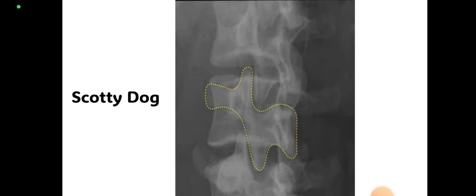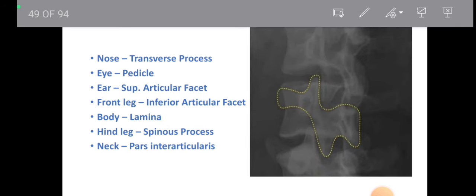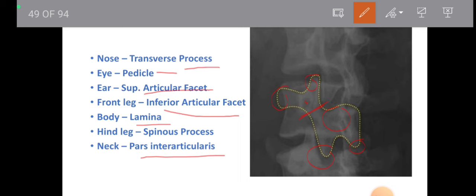The scotty dog represents certain structures: the nose is the transverse process, the eye is the pedicle, the ear is the superior articular facet, the front leg is the inferior articular facet, the body is the lamina, the hind leg is the spinous process, and the neck is the pars interarticularis.